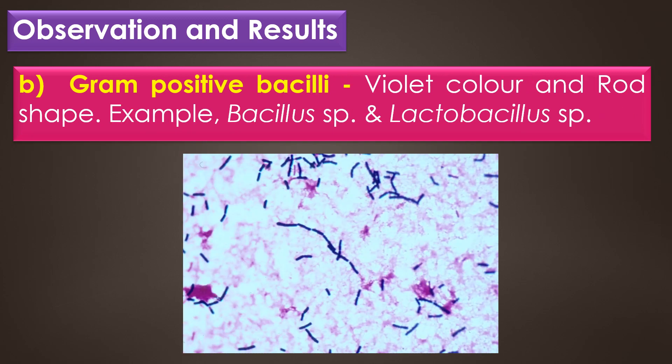Gram positive bacilli appear in violet color and rod shape. Examples for gram positive bacilli are Bacillus species, Lactobacillus species, Clostridium species, and Corynebacterium species. This image shows the gram positive bacilli.